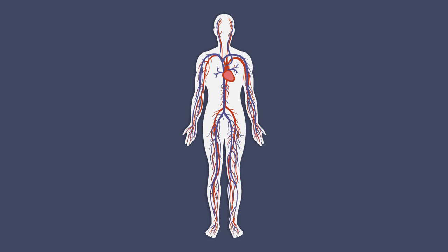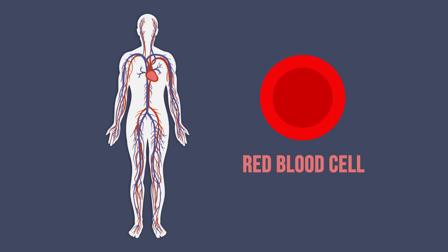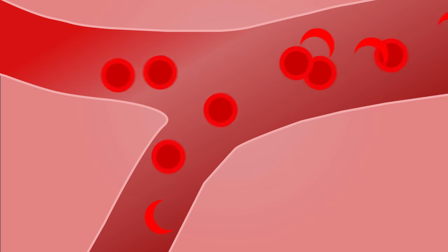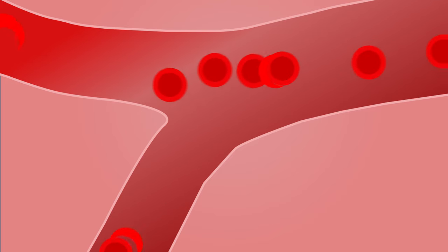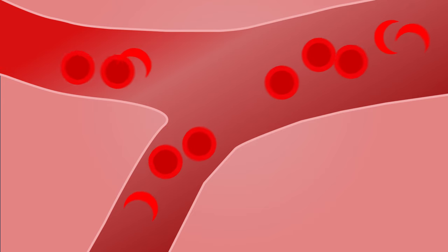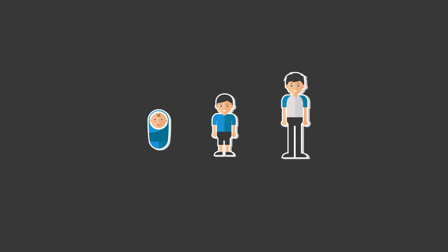Sickle cell disease is an example of a genetic mutation that is harmful to humans. This mutation causes the hemoglobin molecules inside red blood cells to crystallize, meaning that instead of being the usual round shape, the red blood cells of sickle cell sufferers are an abnormal sickle-like shape. This makes it harder for these cells to carry and deliver oxygen.